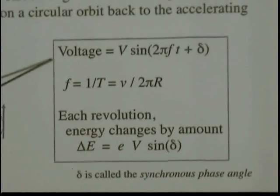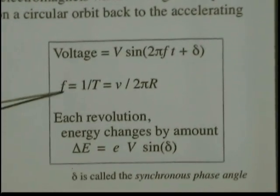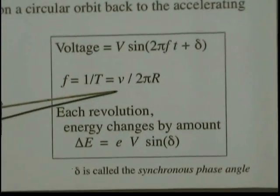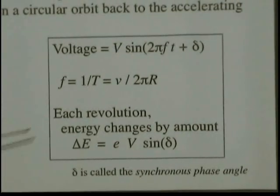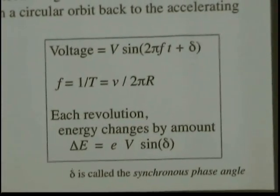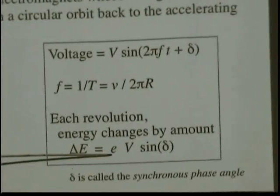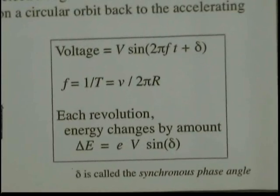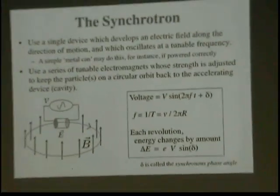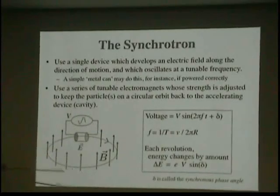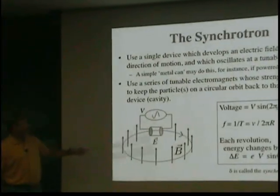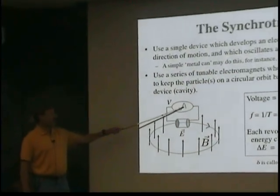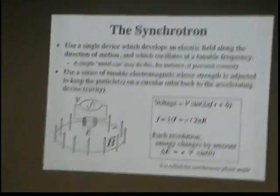The voltage needed is given by a specific relation. The frequency is inversely proportional to the revolution period, as we saw in the cyclotron. In each revolution, the energy changes by an amount proportional to the charge times the voltage times the sine of some angle — which we call the synchronous phase angle. The sine wave is generated by this device. We're not going to be exactly on the crest, usually just below or just above — on either side of the peak.